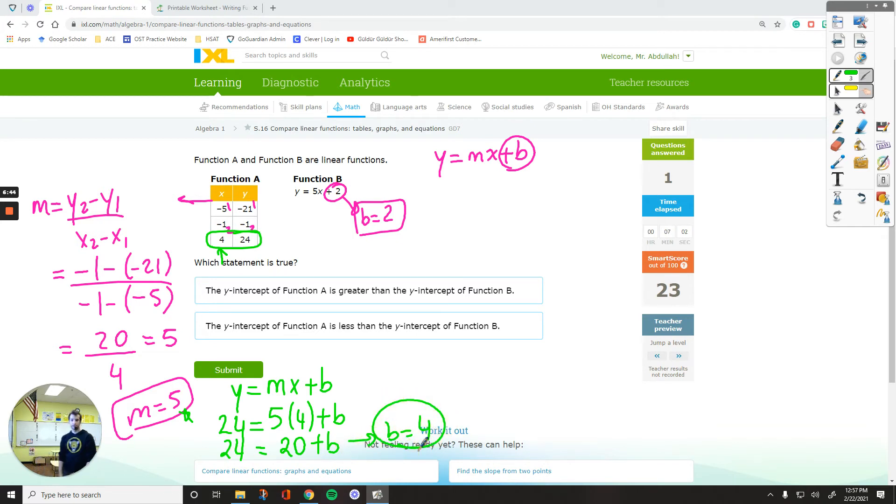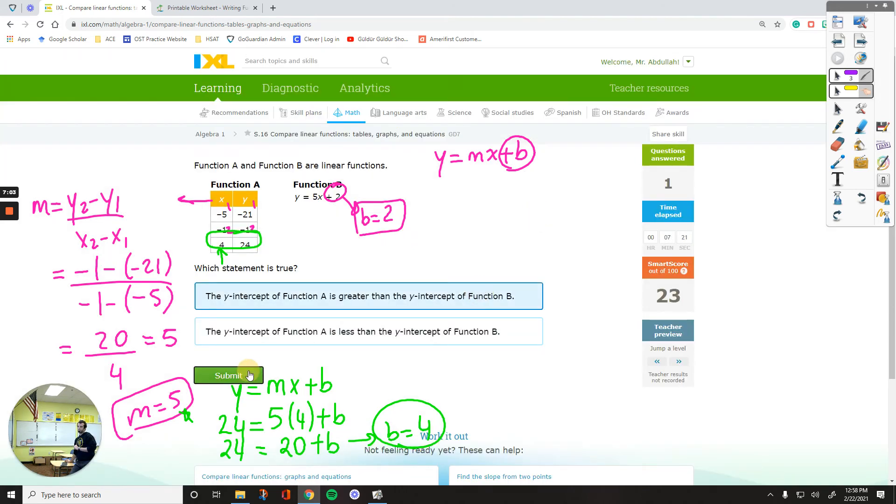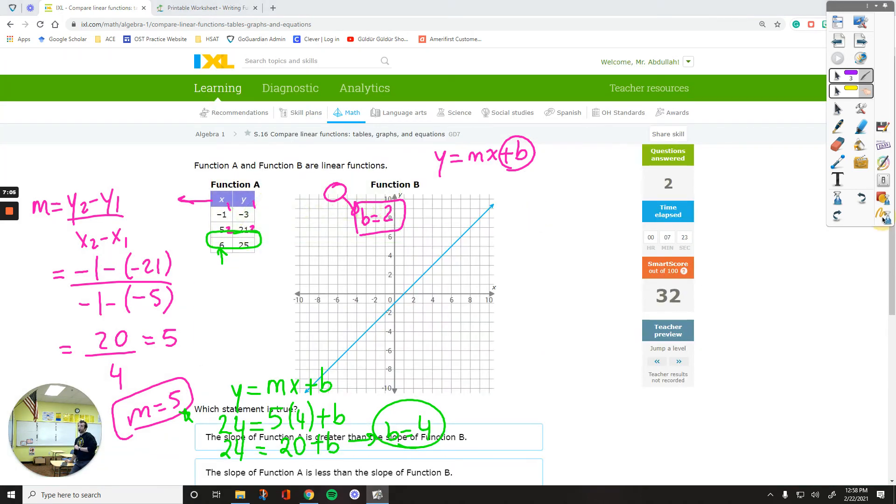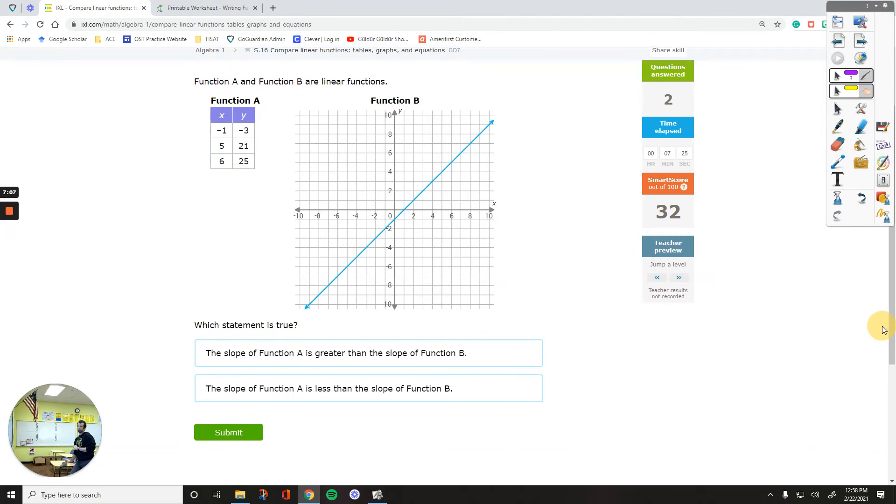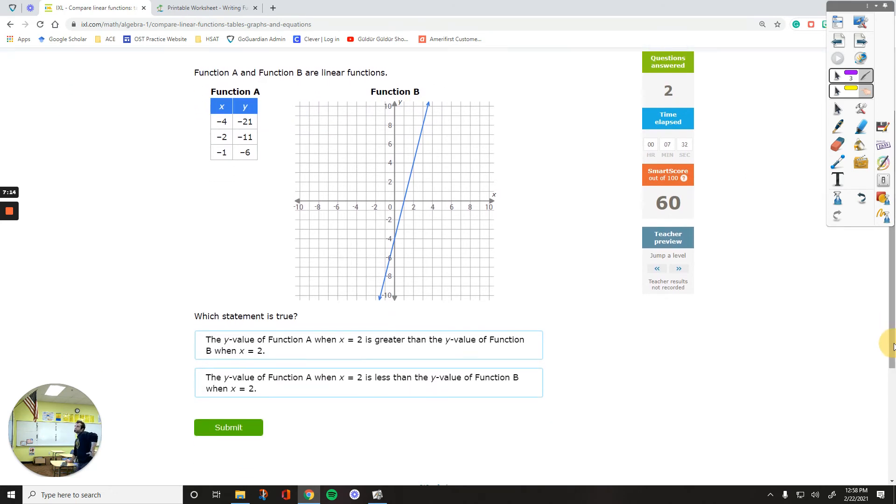So we figured out the b-value for the table as well versus the b-value for function b was 2. So 4 versus 2. Of course, the first one is going to be greater than the second one. Let's check this question out. It's about comparing the slopes. We did an example about this.